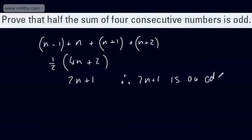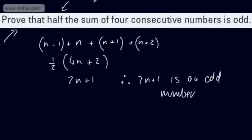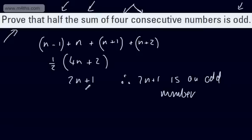So it is an odd number, and that has shown that that is true. To summarise: we're adding 4 consecutive numbers — N, N plus 1, N plus 2, N minus 1 — taking half the sum, and showing it equals 2N plus 1, which is an odd number. That's an odd number, so we just show this in our work and this would be perfectly fine — nice and straightforward.